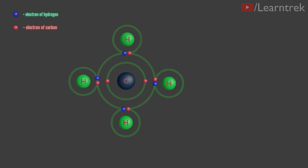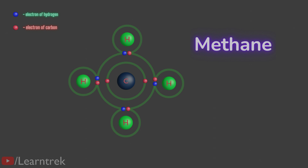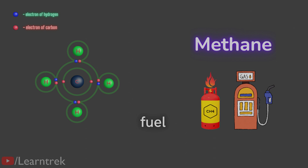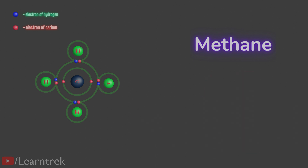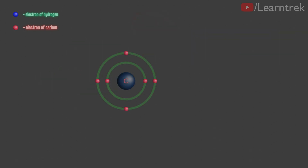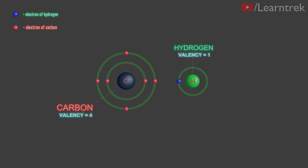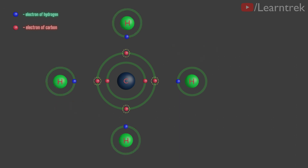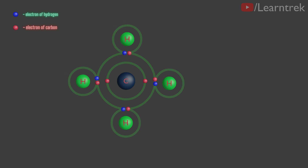Let us now take a look at methane. Methane is a compound of carbon which is widely used as a fuel. In methane, carbon is bonded to four hydrogen atoms by four single covalent bonds. The chemical formula of methane is CH4. We know that the valency of carbon is four and the valency of hydrogen is one. So, carbon shares its four valence electrons with four atoms of hydrogen to achieve noble gas configuration.